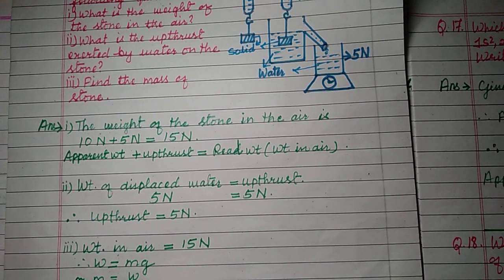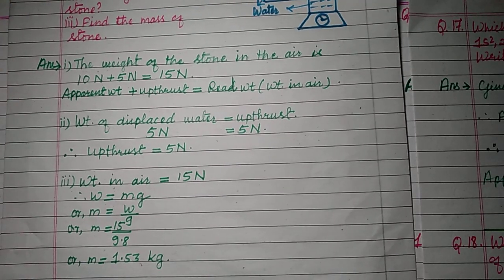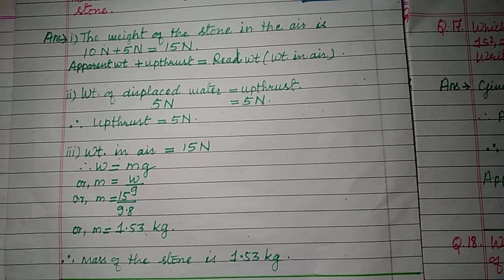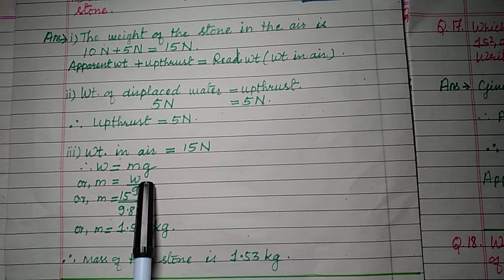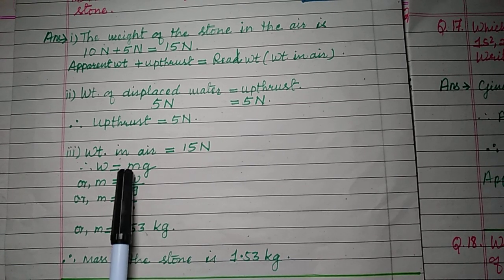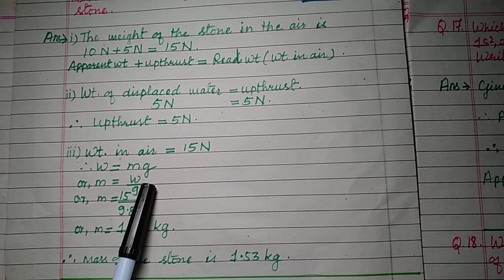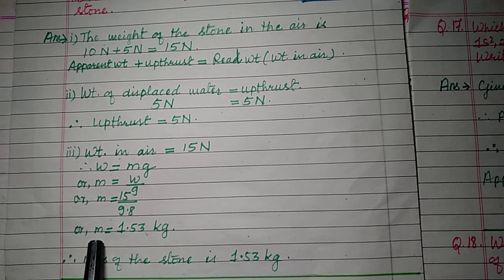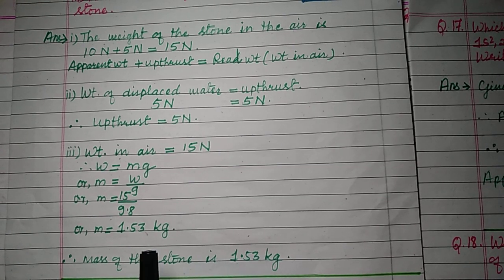Question three: find the mass of the stone. Mass should be calculated from the real weight — the weight in air — which is 15 newton. Using W = mg, rearranging gives m = W/g. Weight is 15 newton and g is 9.8 m/s². By calculation, the mass is 1.53 kg.